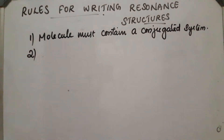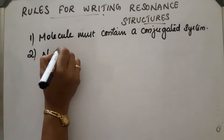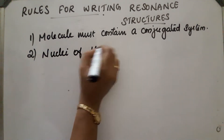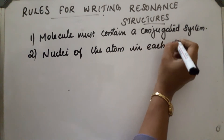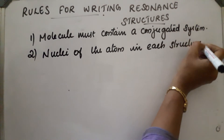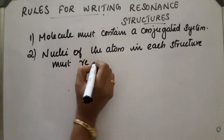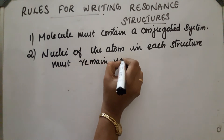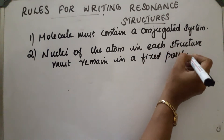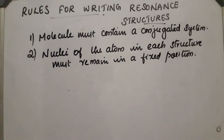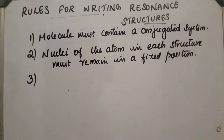Second rule: the nuclei of the atoms in each structure must remain in a fixed position. That means there is only the movement of electrons through the ring; the nuclei of the atoms must be fixed.